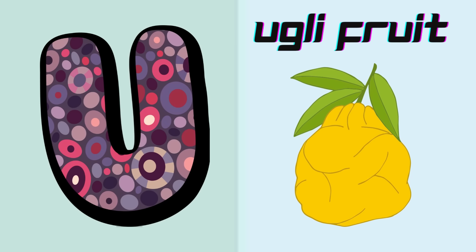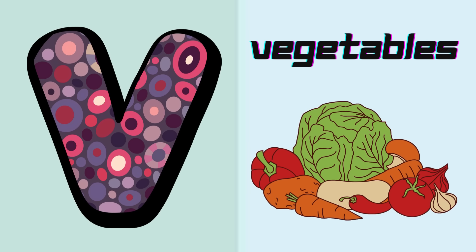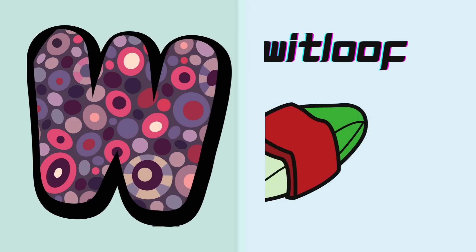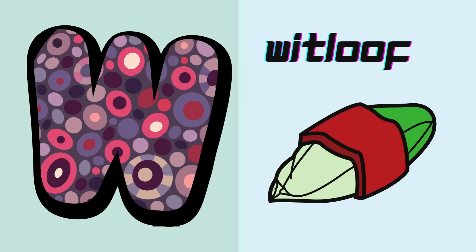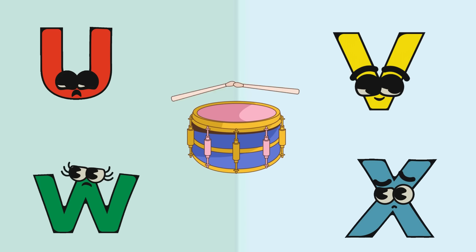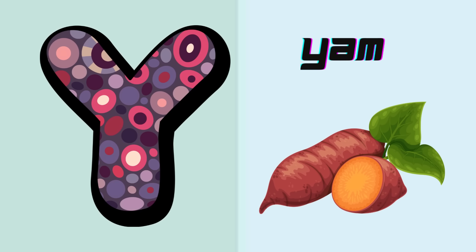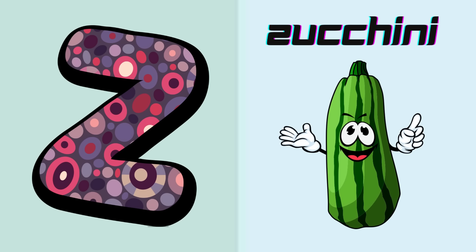U is for ugly fruit. V is for vegetables, v, v, vegetables. W is for whit loaf, w, w, whit loaf. X is for zymenia calf, z, z, zymenia calf. Y is for yam, y, y, yam. Z is for zucchini, z, z, zucchini.